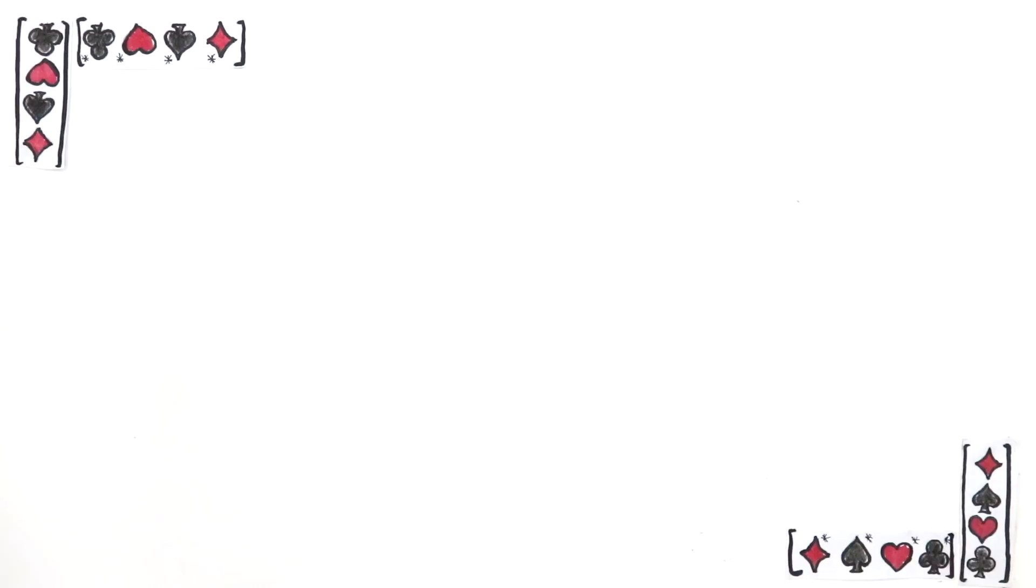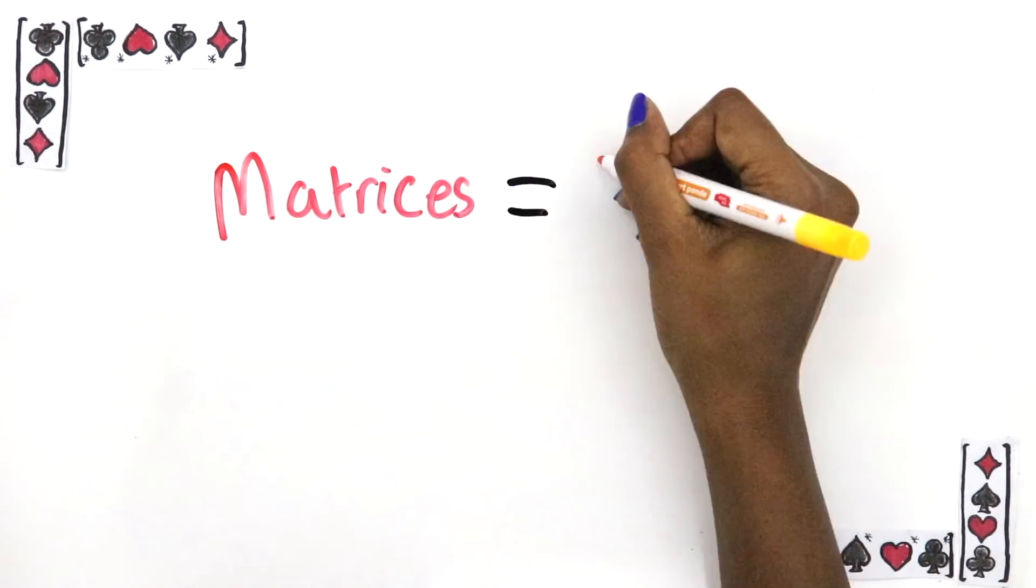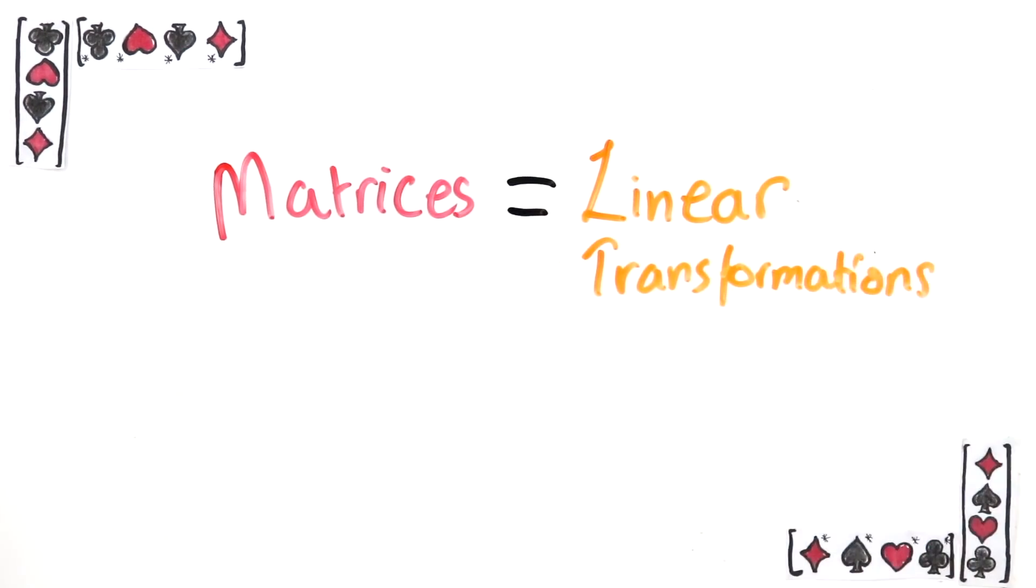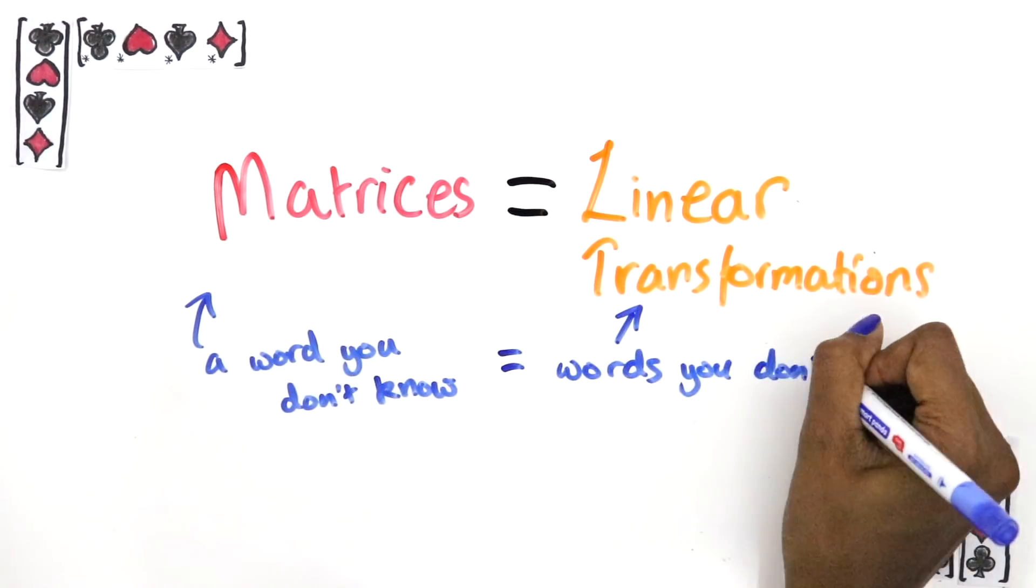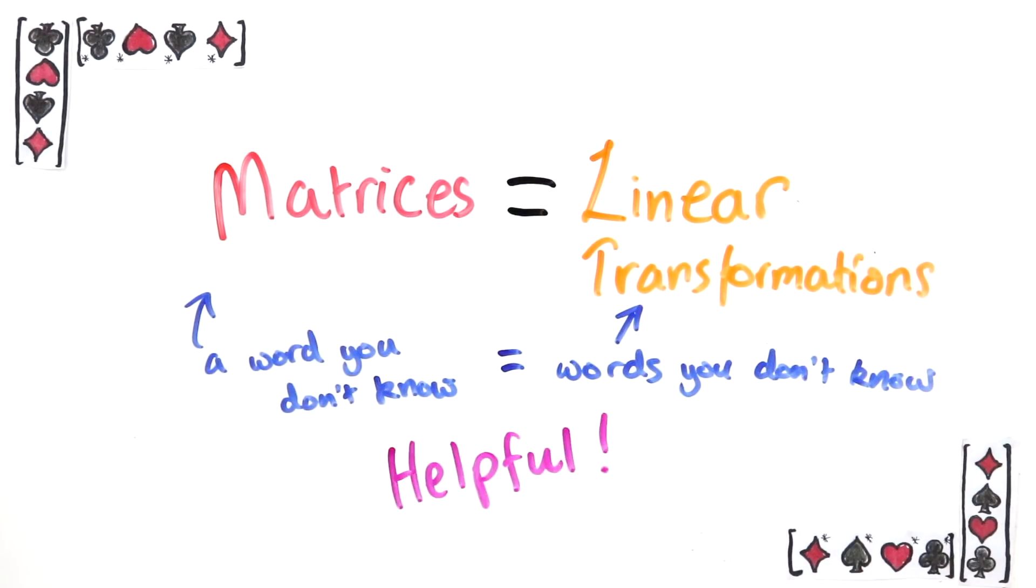This is what matrices really are. They are linear transformations. Okay, so let me explain.